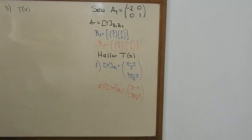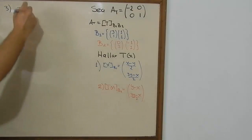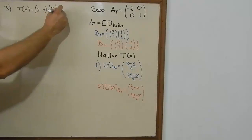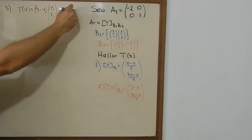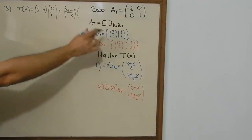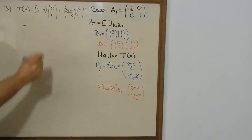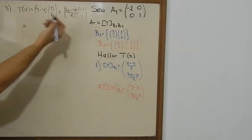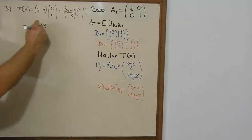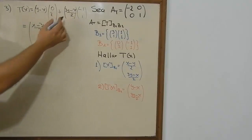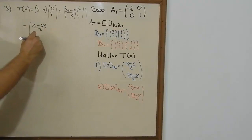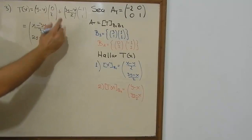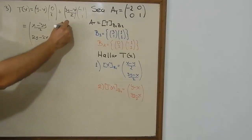Since this is not what we're looking for — we need the transformation in a canonical way — we need to make a linear combination using the vectors of base 2, multiplied by the coordinates of the vector we found in step 2. So we multiply (y − x) times the first vector of B2 and (3y − x)/2 times the second vector of B2. For the first component: (y − x) times 0, giving 0, plus (3y − x)/2 times −1, giving (−3y + x)/2. For the second component: (y − x) times 2 plus (3y − x)/2 times 1.